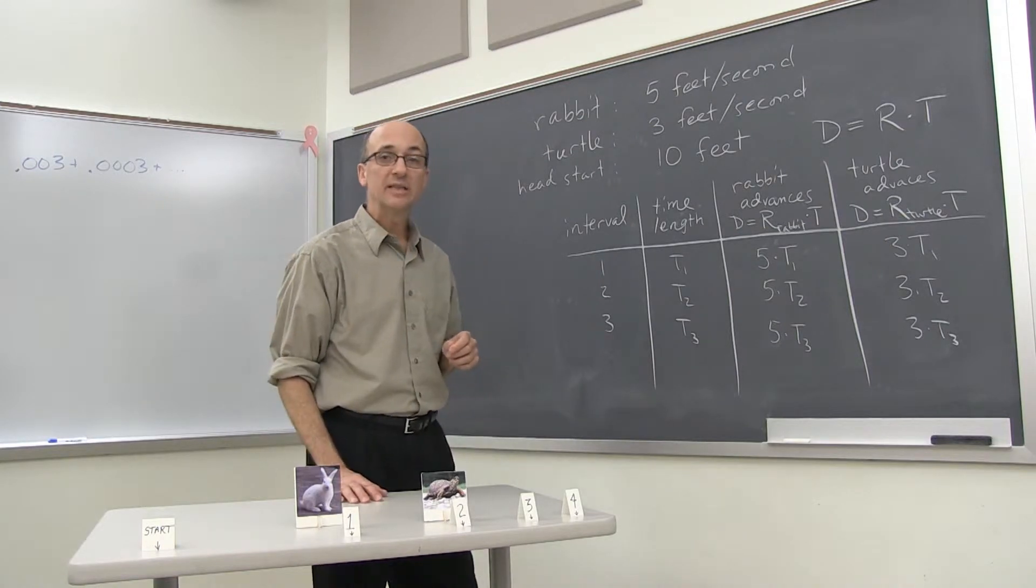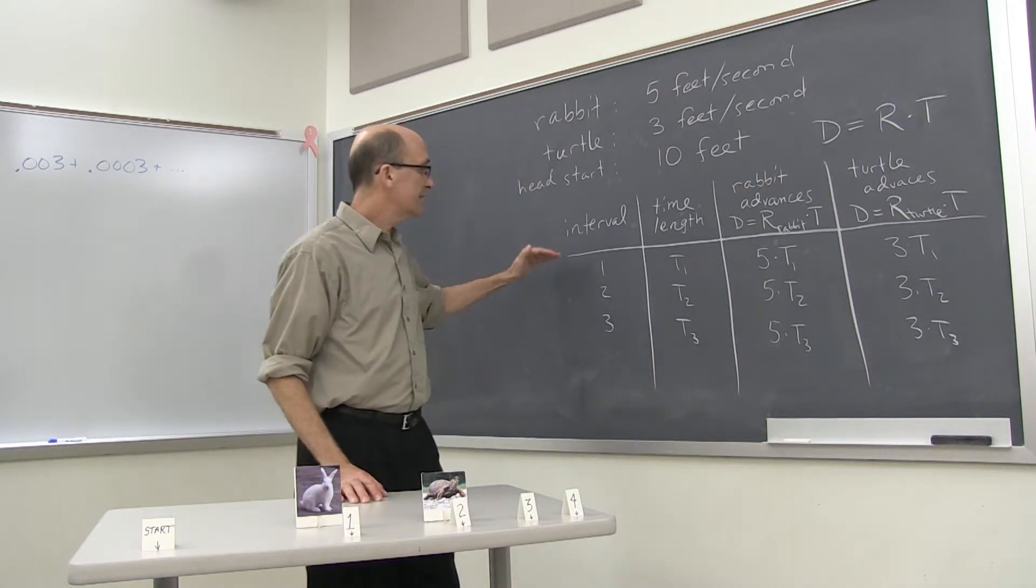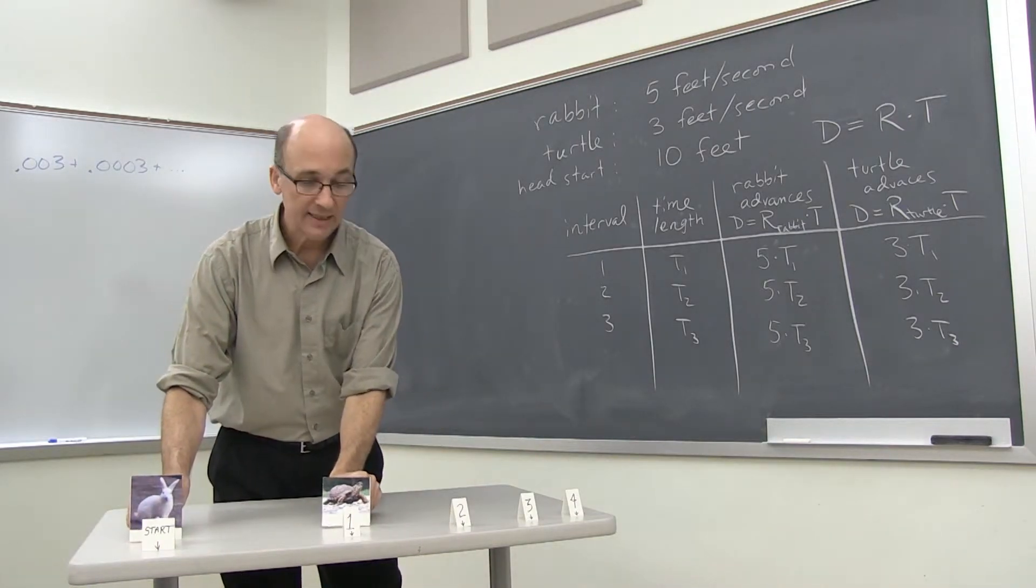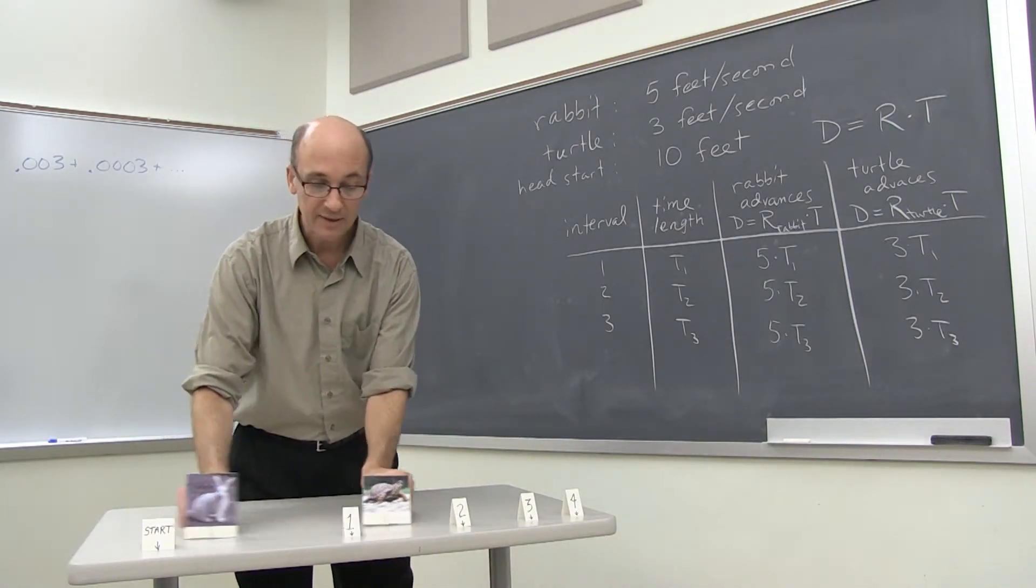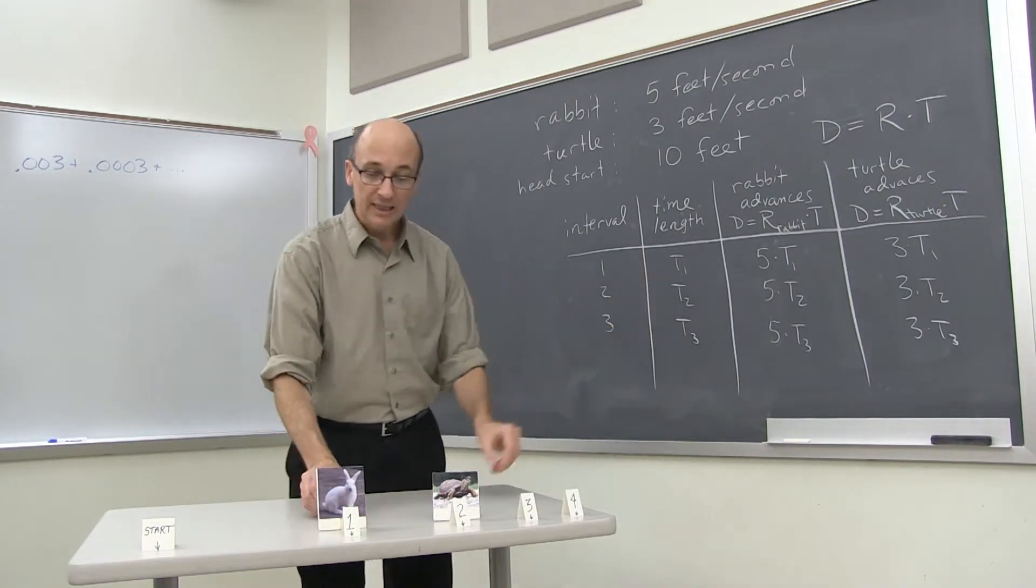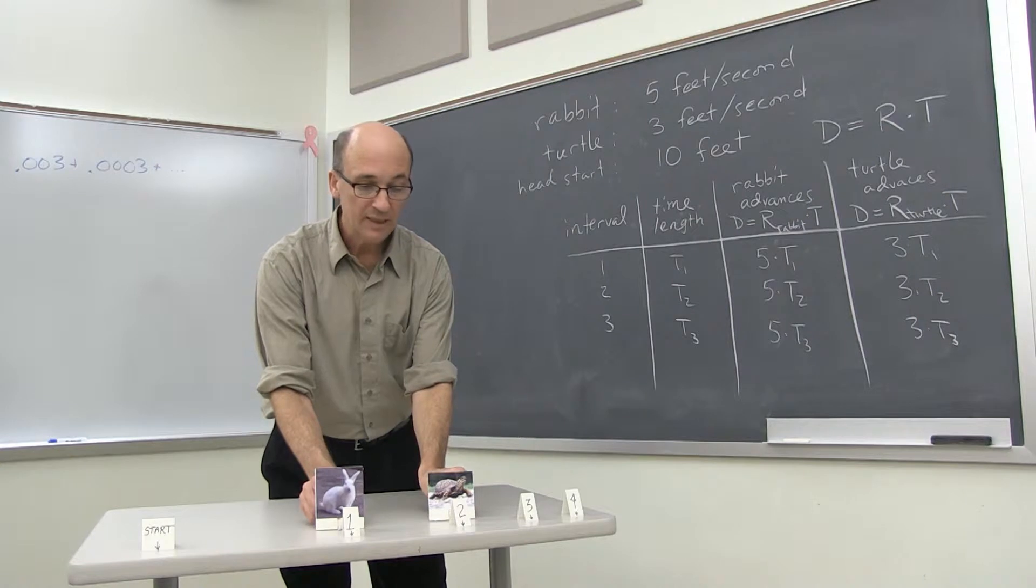All right, here's a chart of what's happening step by step. I'm going to break the story up into intervals. Interval one is where the rabbit runs from the start to point one. That takes time one. And then the rabbit runs from point one to point two.